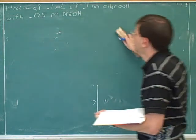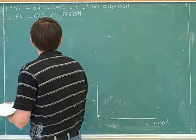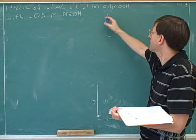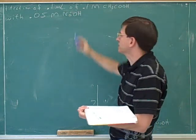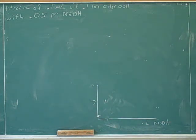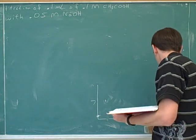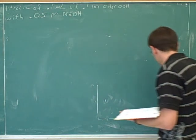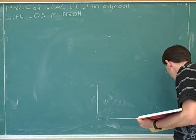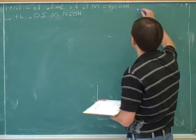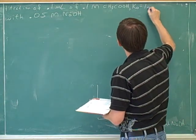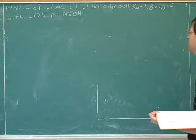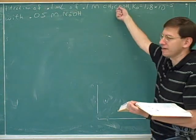So now we'll think about titrating 0.1 milliliters of 0.1 molar acetic acid — if you remember from organic chem — with 0.05 molar sodium hydroxide. So what do we put on the horizontal axis? Milliliters of sodium hydroxide. By the way, the Ka, which you would be given on the test, is 1.8 times 10 to the negative 5 for acetic acid.